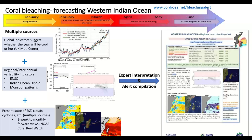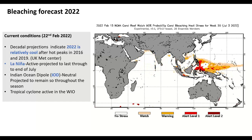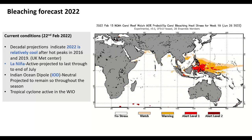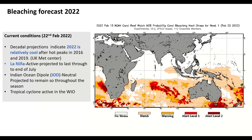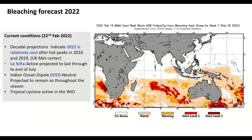Through expert knowledge, alerts are compiled and sent to Western Indian Ocean reef managers describing the state of the ocean for the next two weeks. The alert system is sent out twice a month, running through the summer season from January to around June. Looking at 2022 forecasts from the UK Meteorological Centre, the season is predicted to be relatively cool after peaks in 2016 and 2019. There is an active La Niña expected to last through to the end of July, the Indian Ocean Dipole is neutral, and the region has had four active tropical cyclones.